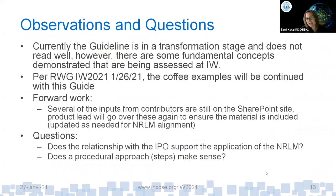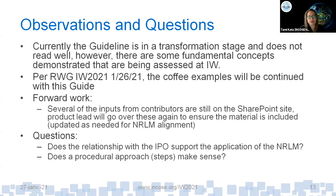The guide is in a transformation stage. What's on the Connect site doesn't reflect the finished product — it's a bit clunky. The vision is that when someone opens this guide, it's very easy to find how to develop need statements, manage them, convert to requirements, manage those, and ensure quality and validity. It should be easy to find, have examples, and crisp step-by-step instructions. It shouldn't be industry-specific — generic enough that whether you're in medical device, oil and gas, or aerospace, the steps resonate. Coffee examples will continue, and requirement traceability concepts using a relatable example will be shown.